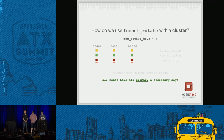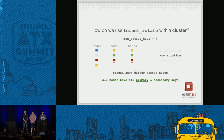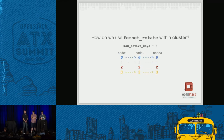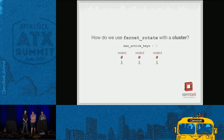On the next rotation from node one, when we're at max active key count, we remove the oldest key. Any tokens encrypted with the removed key should hopefully be invalid due to expiration by then. We then sync the cluster back to the same state. In Keystone's actual implementation, integer names are used: the staged key is always zero, the primary key is always the highest index, and old secondary keys are removed. The pattern repeats: rotate on one node, validate everything works, then push to the rest.